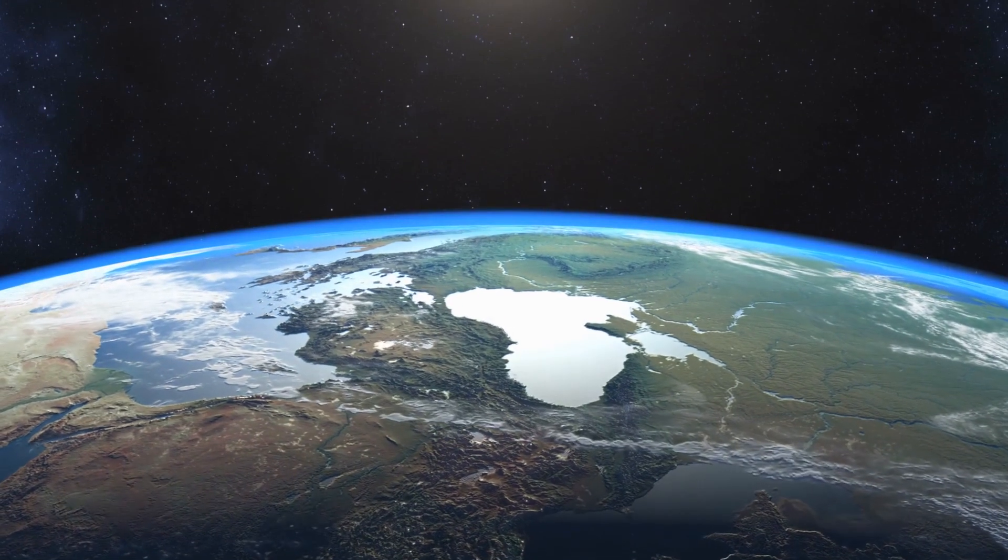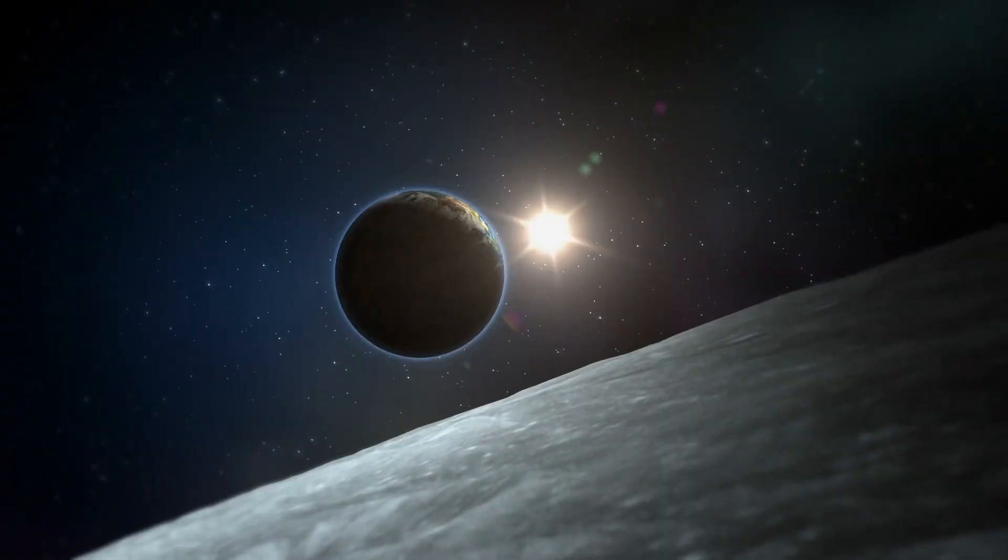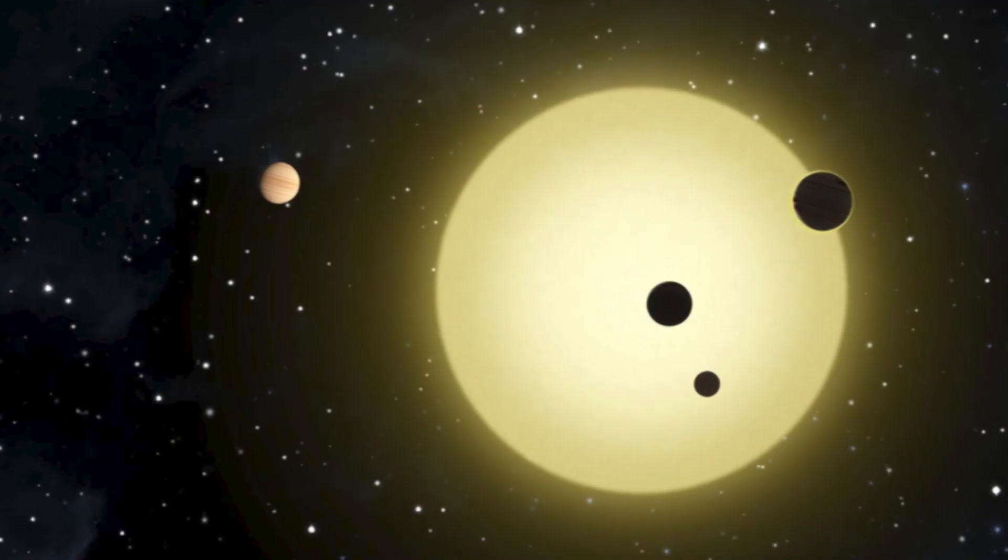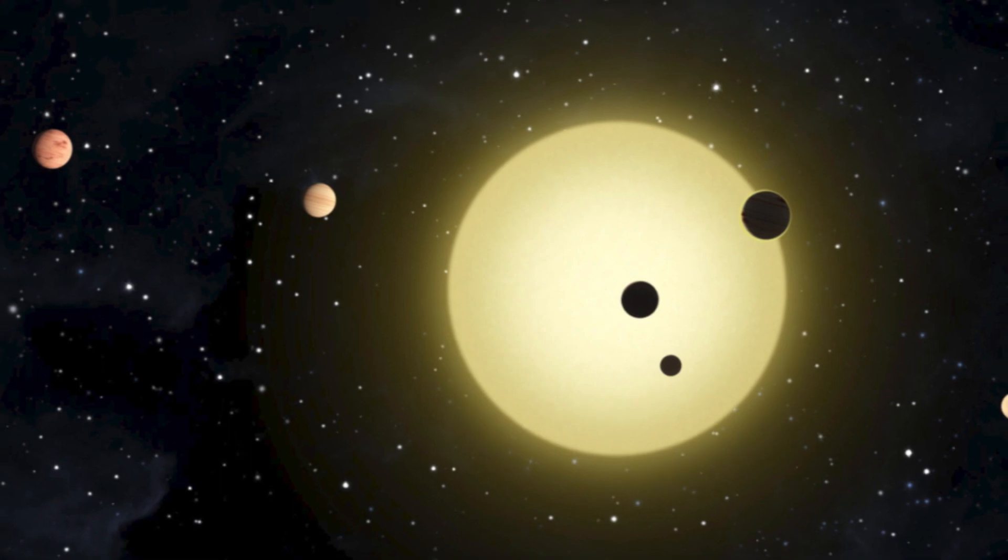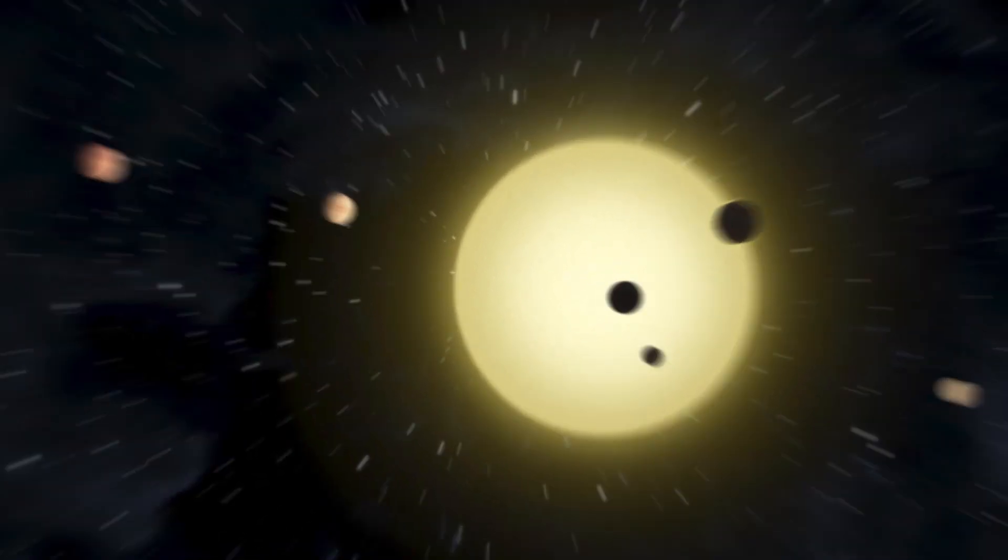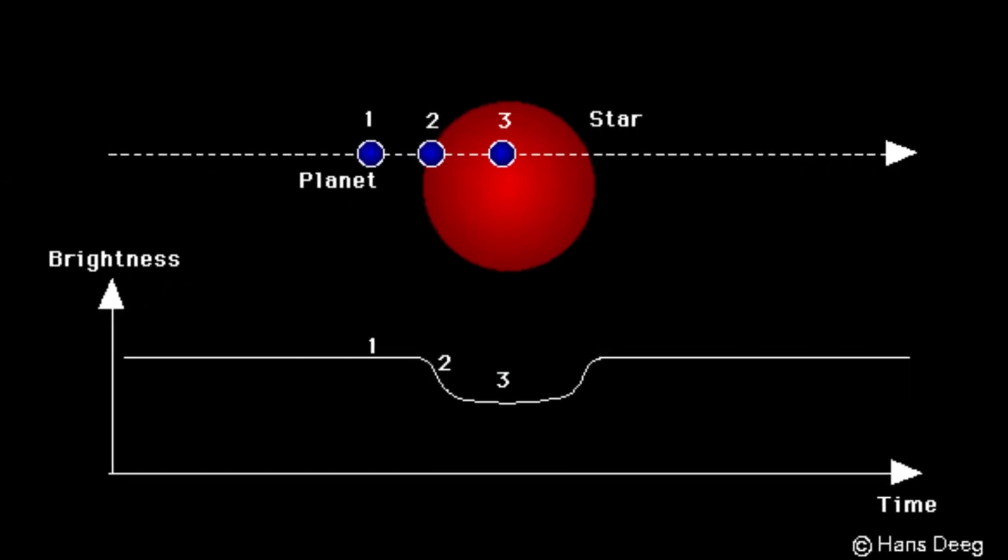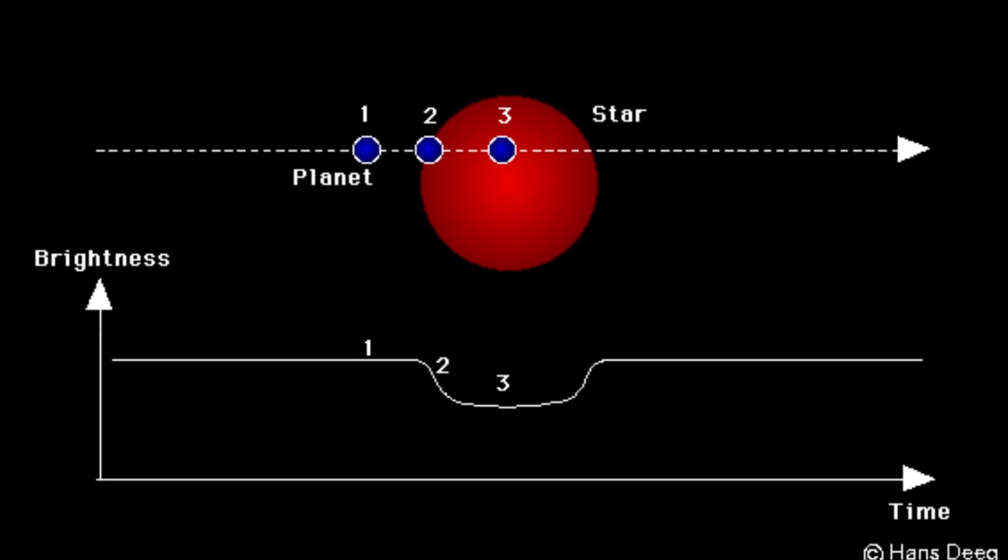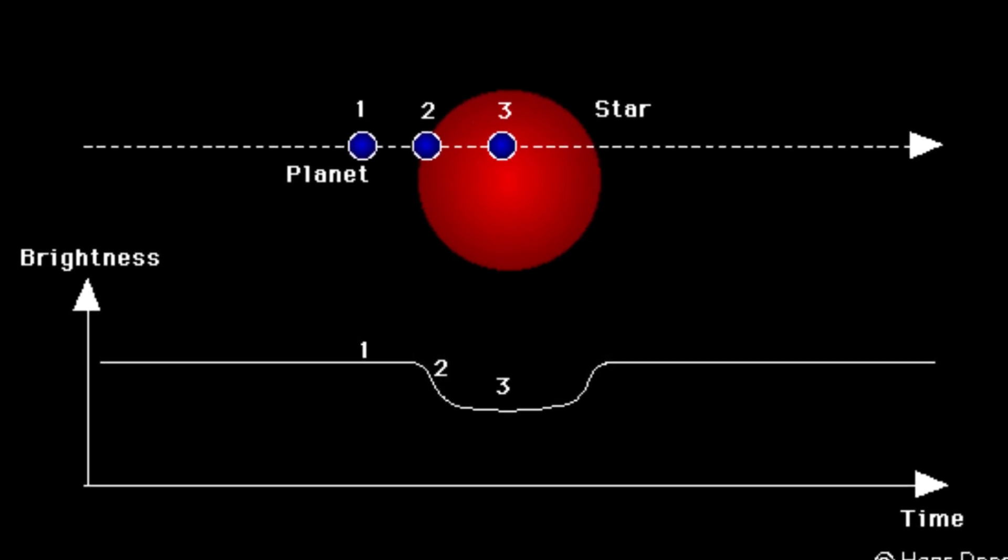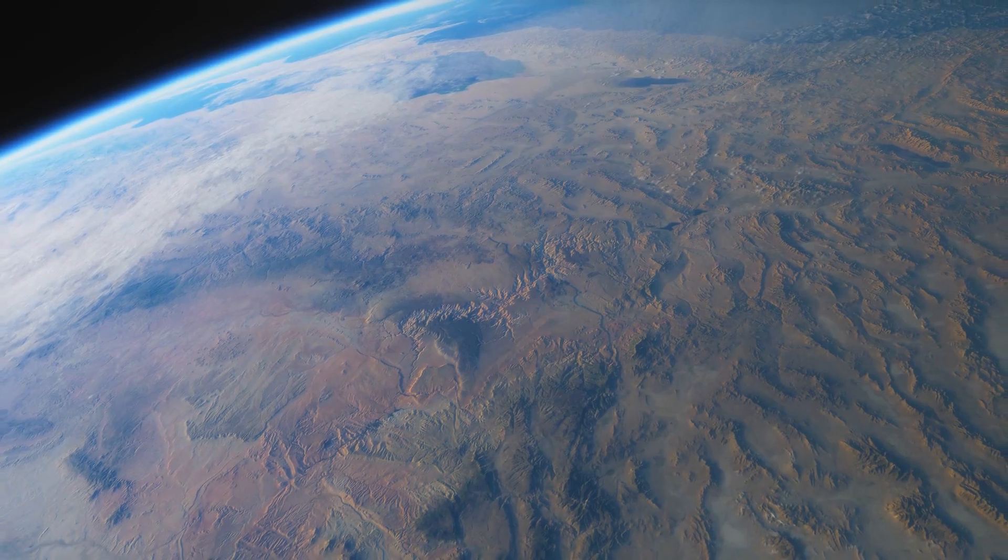Kepler has traditionally relied on transit methods for locating exoplanets. The transit method essentially means that we detect a planet when it comes in front of a star. The light that we receive from the star is dimmed to some degree when the planet comes between the lens and the star, and that's how we know that there is an exoplanet.